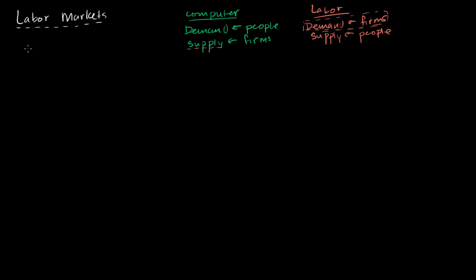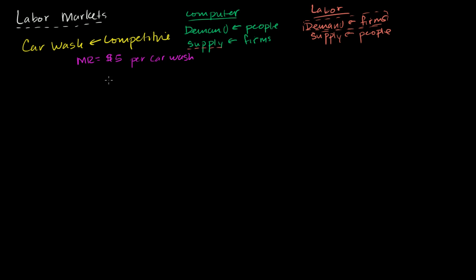Let's assume I run a car wash — a competitive car wash. I have to be a price taker. I do not have a monopoly or oligopoly; I'm not even a monopolistic competitor. There are many car washes in the city; we are undifferentiated and offering the same service. So I'm going to be a price taker. Let's say the equilibrium price in this market is $5 per car wash. That also means my marginal revenue is a constant $5 per car wash — one car wash gets $5, two gets $10, three gets $15. In a monopoly, the marginal revenue would change.